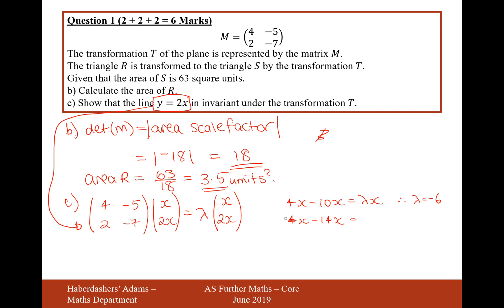So it's going to be 4x minus 14x equals... Sorry, no, not 4x, 2x. 2 times x minus 14x equals 2 lambda x. So therefore, lambda equals minus 6 again.